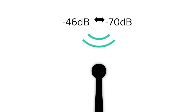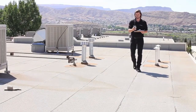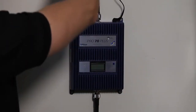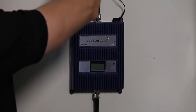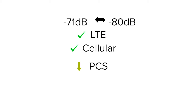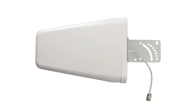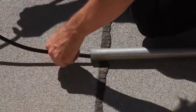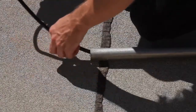Negative 46 to -70 dB is the sweet spot. If you're getting signal readings within this range, the booster will provide a strong signal and the amplifier will be working at maximum performance. Negative 71 to -80 dB is fine for LTE and cellular bands, but coverage for PCS and AWS bands begins to diminish here. Consider using a higher gain donor antenna like a Yagi directional, and keep cable runs at a minimum to limit signal loss.